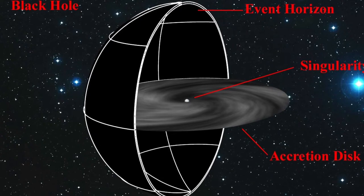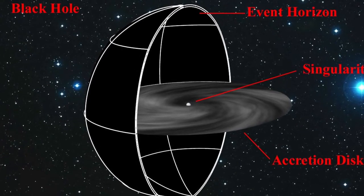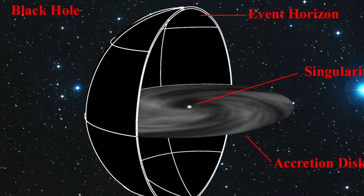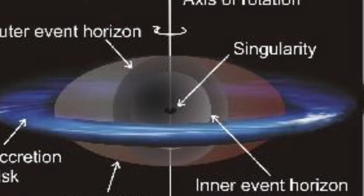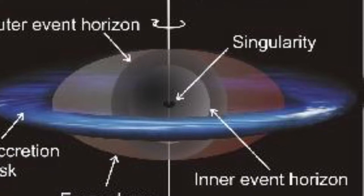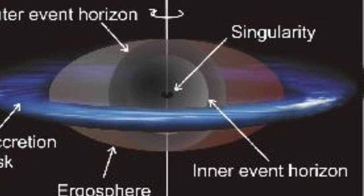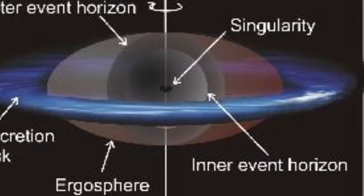Black holes do not give off light, so we cannot see them. We know that black holes are out there by using x-rays. If the black hole passes through a cloud of interstellar matter, it will draw matter towards it. This process is known as accretion.